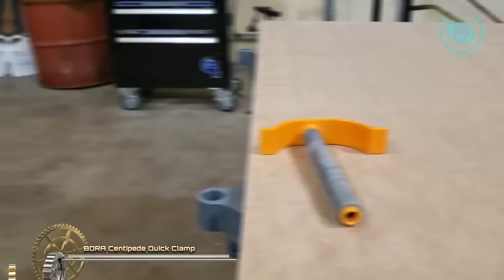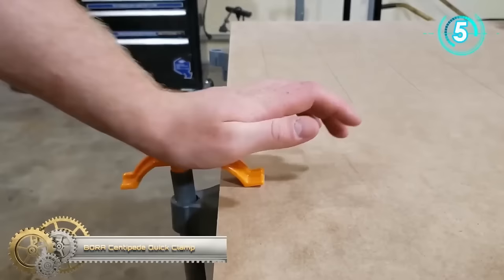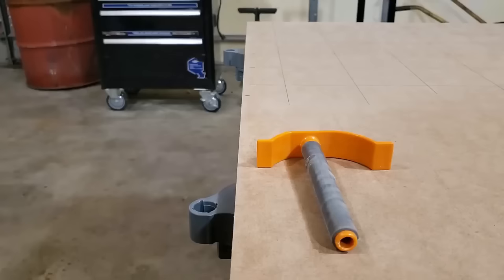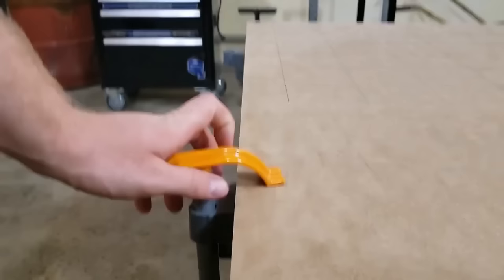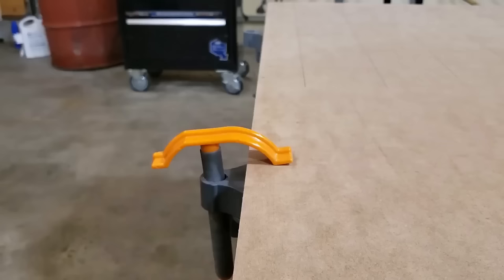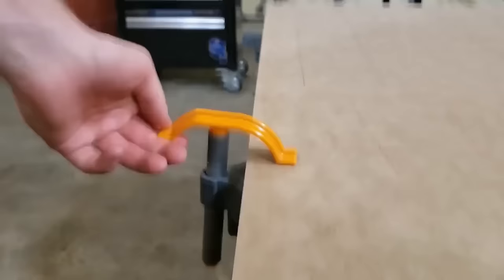The Bora Centipede Quick Clamp is a versatile and robust tool for securing materials like wood, metal, and plastic. It features a quick-release mechanism for easy tightening and release and has a padded jaw for material protection. This clamp can be used for a range of tasks, including holding workpieces in place, securing pieces during glue-ups, stabilizing materials for machining, and creating customized jigs and fixtures. It offers precise adjustments and a strong, secure grip and is compatible with the Bora Centipede workstand for expanded utility.